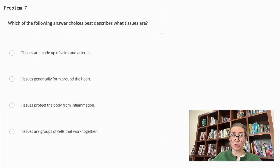Which of the following answer choices best describes what tissues are? Tissues are made up of veins and arteries. Tissues genetically form around the heart. Tissues protect the body from inflammation. Or tissues are groups of cells that work together. Tissues are collections of similar cells that perform a specific function within an organism such as muscle tissue, nerve tissue, connective tissue.